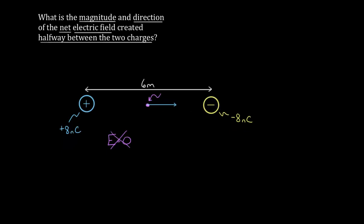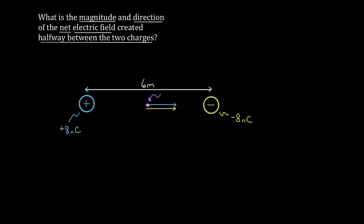Now ask what field the negative charge creates — pretend the positive charge isn't there. Negative charges create a field that points radially inward, so from that side, radially in also points to the right. So these don't cancel. Both the negative charge and the positive charge create a field pointing to the right, so they add up to twice the field from one of them.